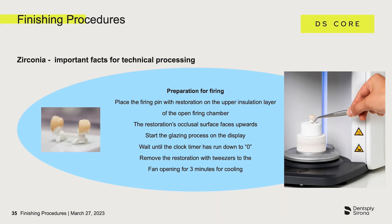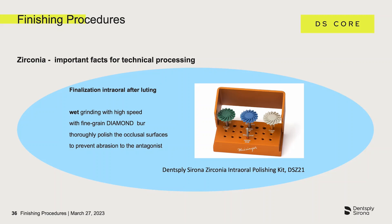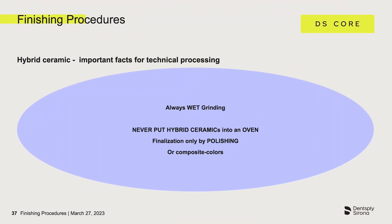If the restoration has to be processed intraorally after adhesive luting, it is important to ensure that this is always done with water cooling. Rough processing such as the removal of interfering contacts can be carried out with fine grained diamonds, and the subsequent polishing is mandatory and should be carried out with special silicone polishers for zirconia.